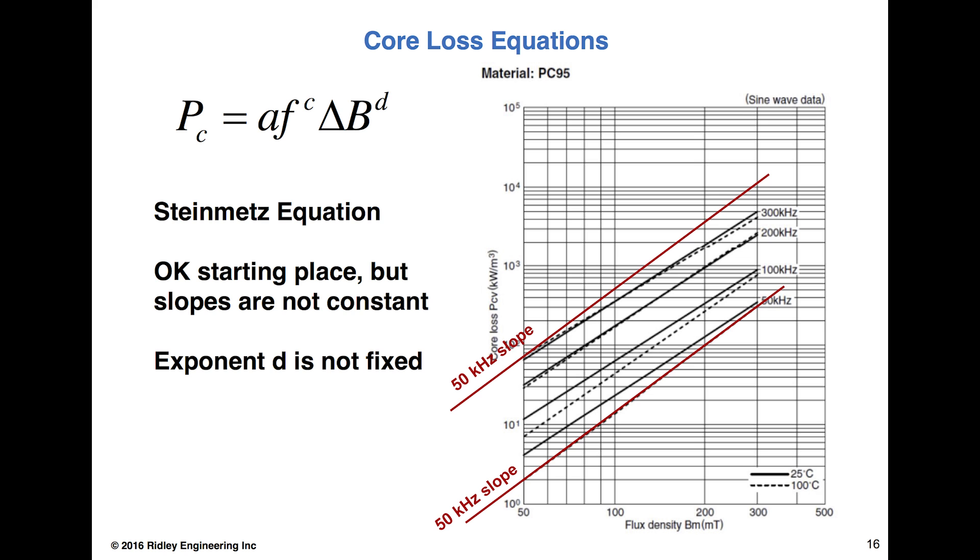But the only accurate data we really have is from the core manufacturers, and that is these loss curves that they give us, not the equations. They will give us the exponents, but we have to be very careful in using that. If you look at the two red lines on the graph here, we see what the slope of the 50 kilohertz line is at the bottom. If we carry that 50 kilohertz slope up to the top and apply it to the 300 kilohertz, we see that the slope has changed significantly, so we cannot use a fixed equation.